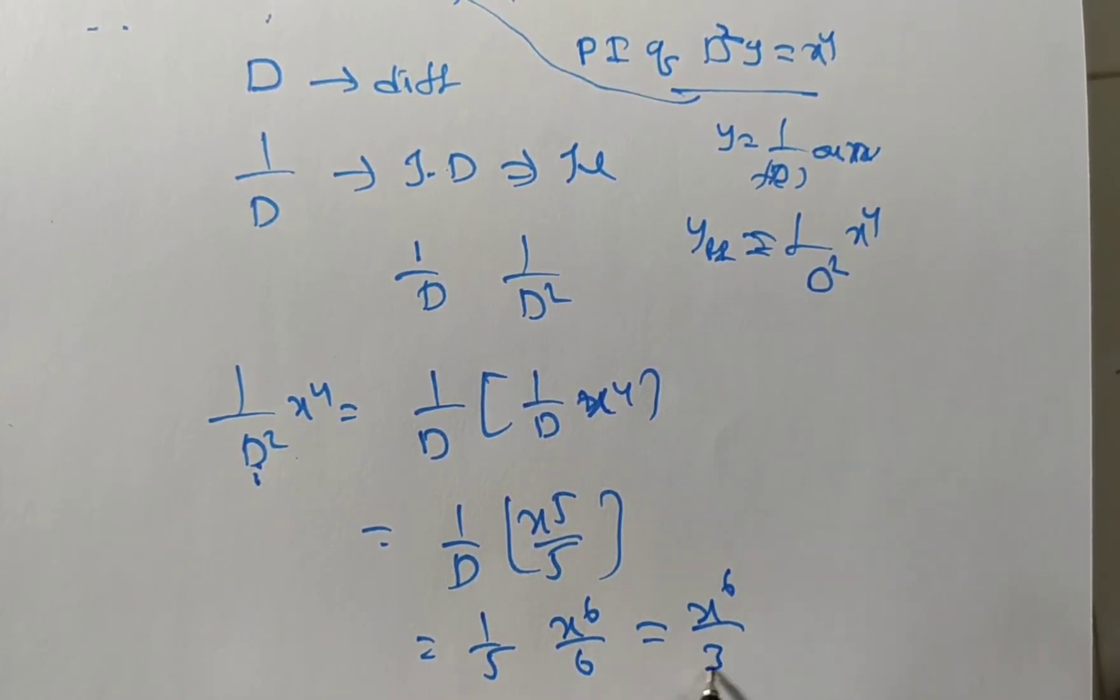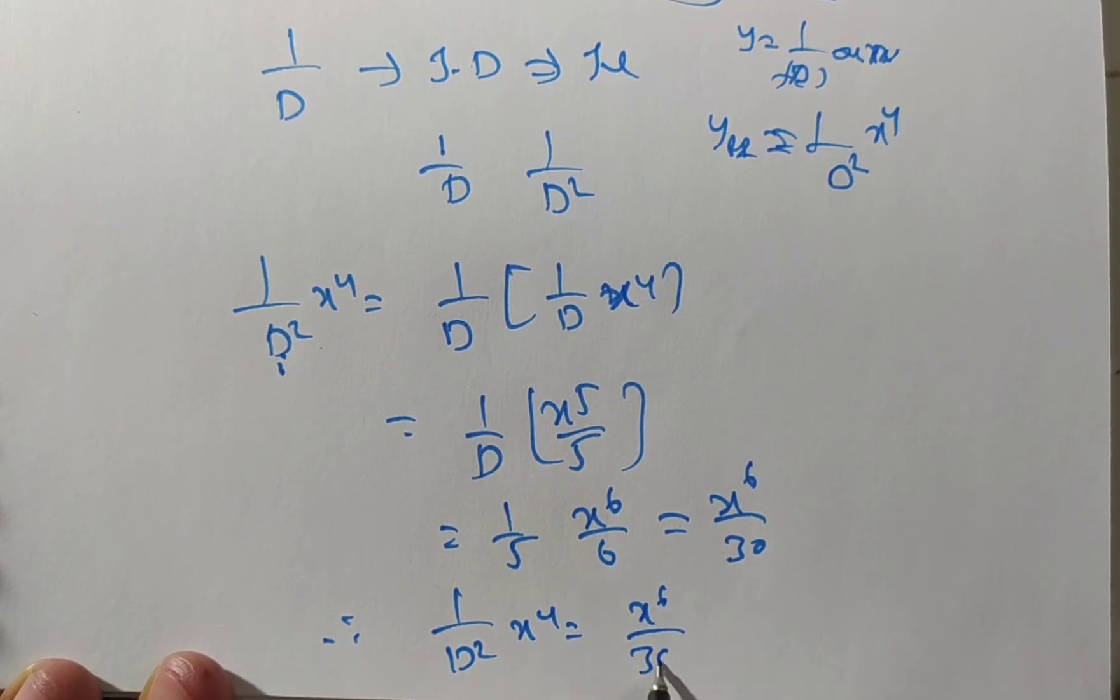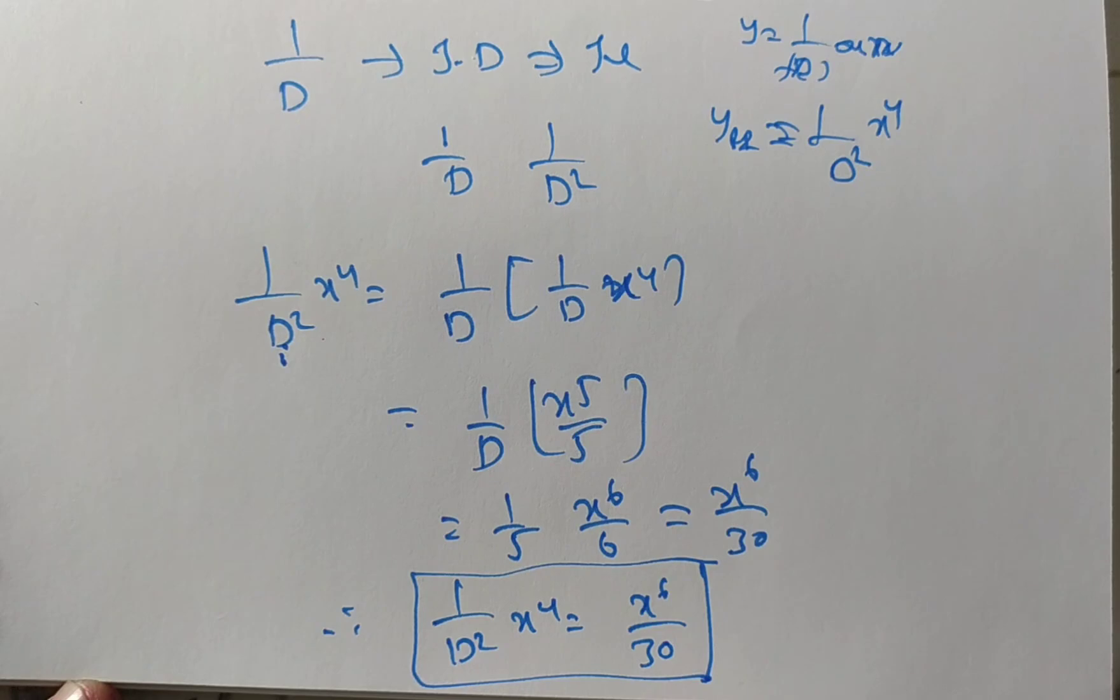Therefore, 1 by D squared times x to the power of 4 equals x power 6 by 30. This is the answer. Thank you for watching this video.